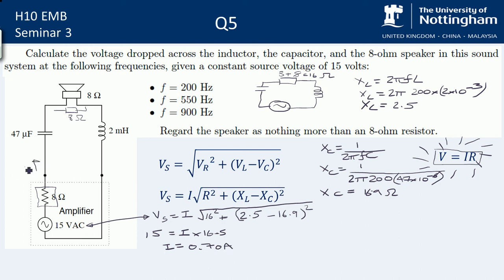So now we've got I. Remember, I is the current that flows through all of this. Now we've got I, we can find the voltage drops because we know that V is equal to IR as we had before.